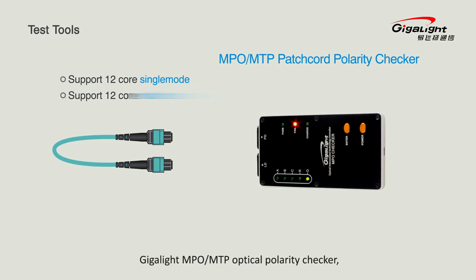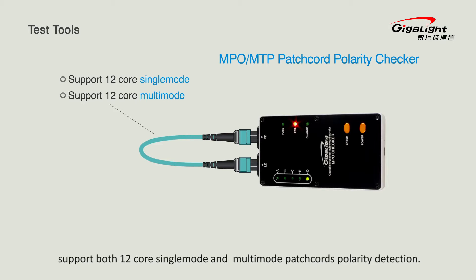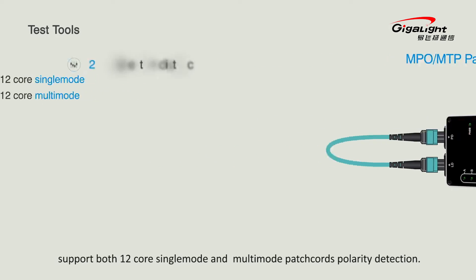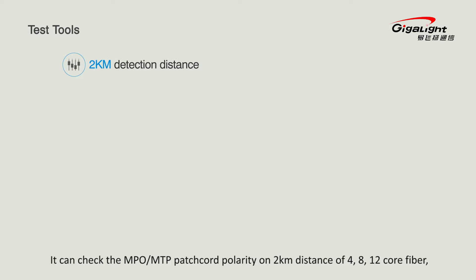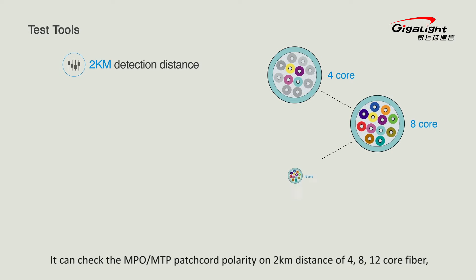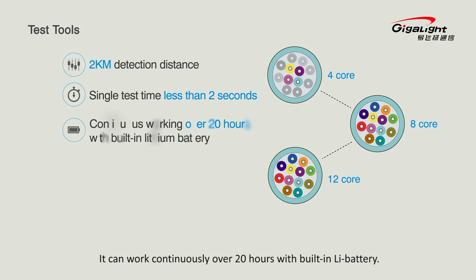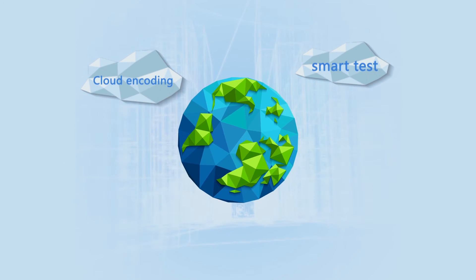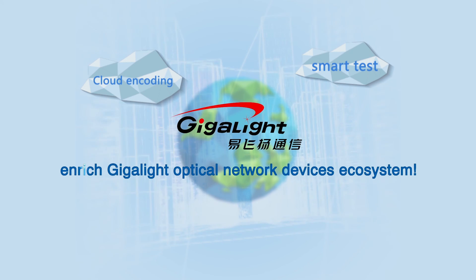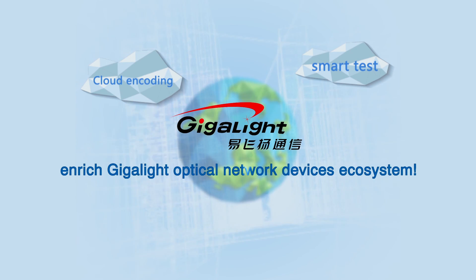Gigalight MPO/MTP optical polarity checker supports both 12-core single-mode and multi-mode patch cord polarity detection. It can check MPO/MTP patch cord polarity over a two-kilometer distance of four 12-core fibers, with a single test time of less than two seconds. It can work continuously for over 20 hours with a built-in lithium battery. Cloud encoding plus smart test tools enrich the Gigalight optical network devices ecosystem.